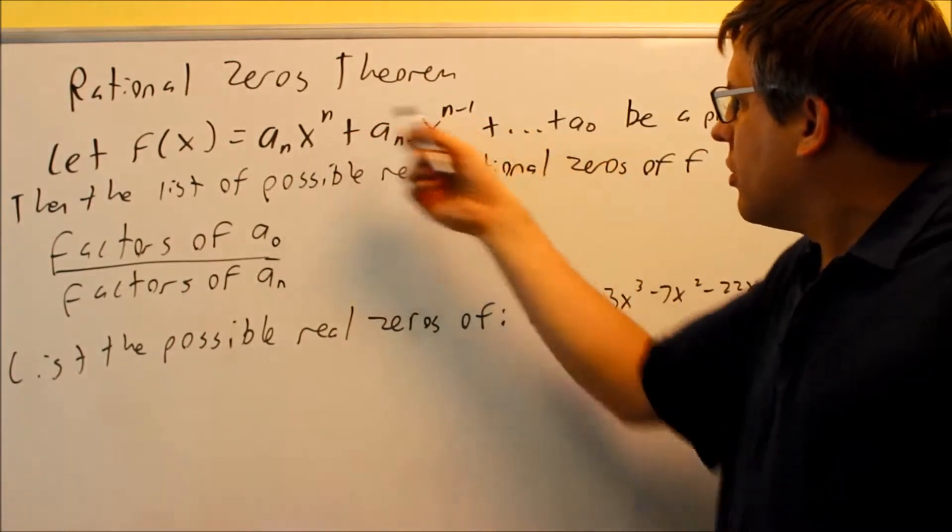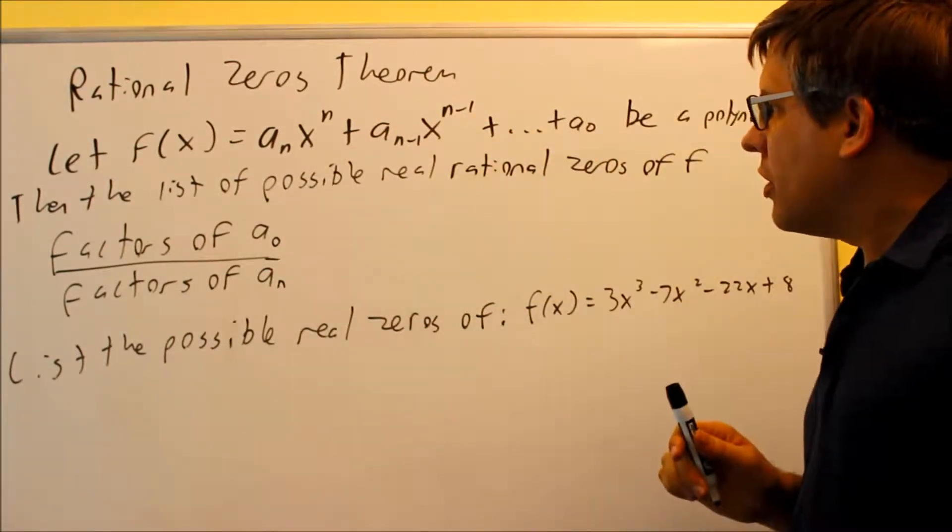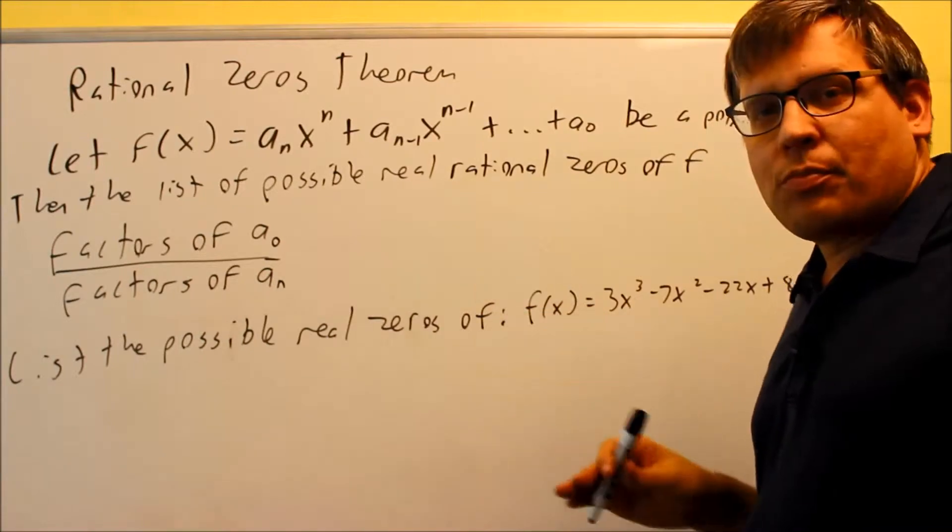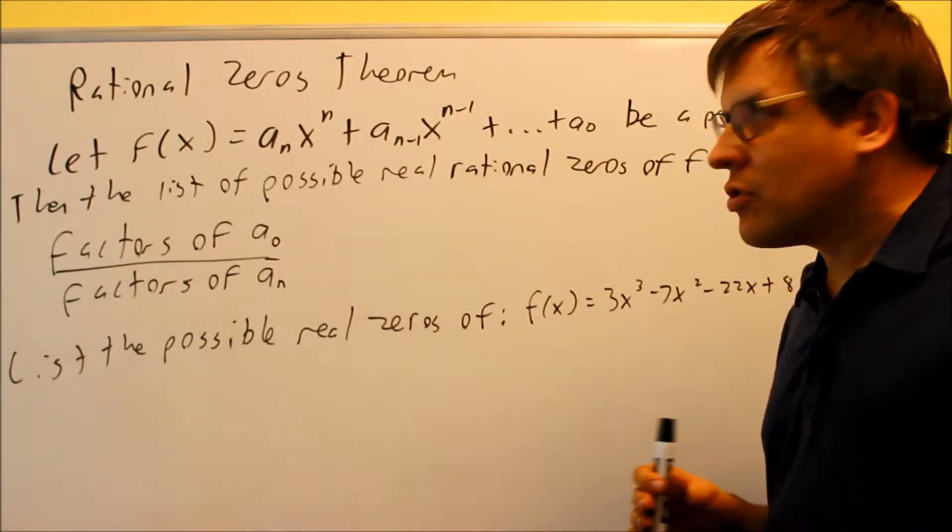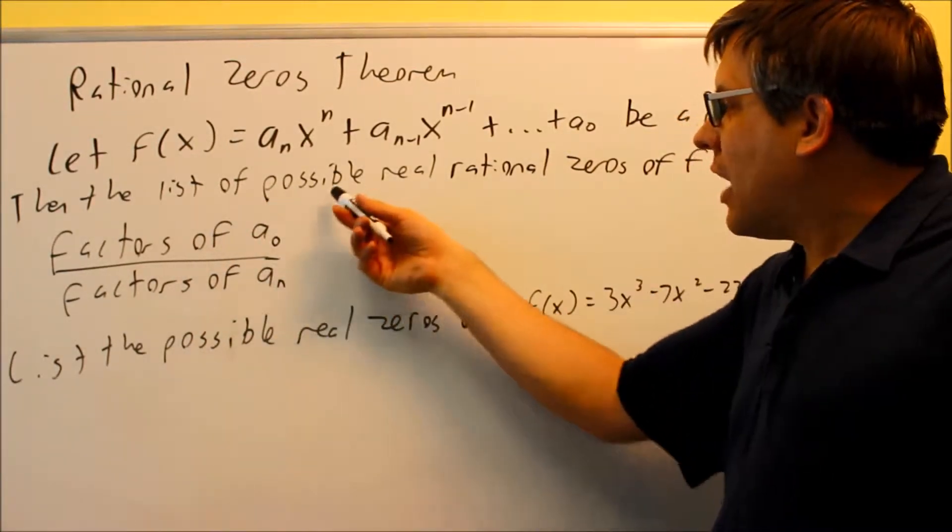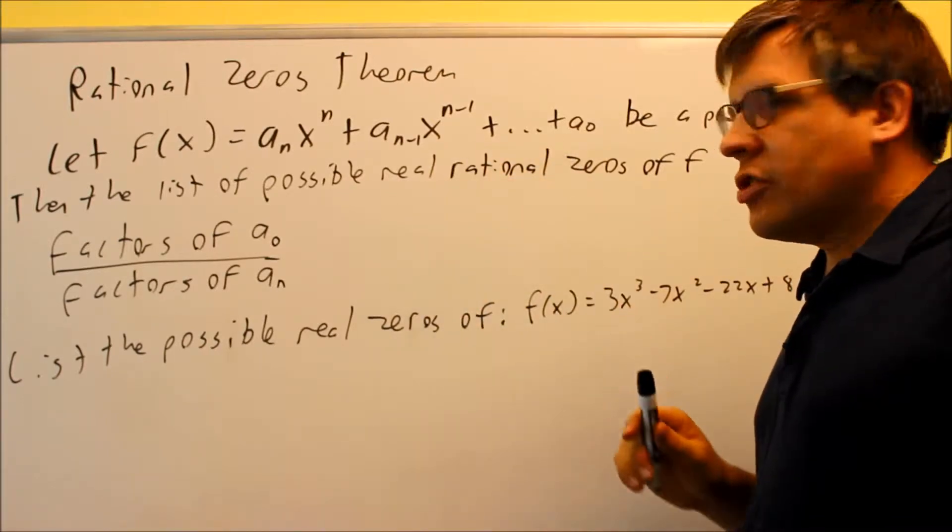So knowing those, we can use just those two numbers to determine how many times the graph possibly can cross the x-axis. We're coming up with a list of possible real rational zeros.